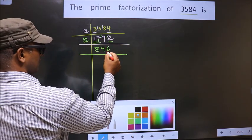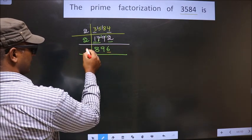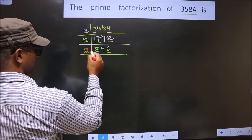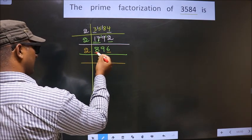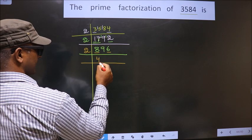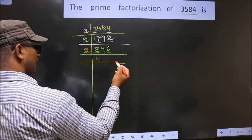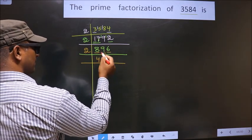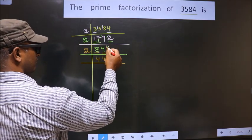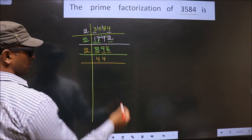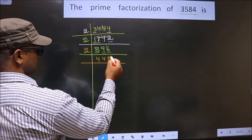Now, for this number, the last digit is 6, which is even, so we take 2 here. First number is 8. When do we get 8 in the 2 table? 2 fours 8. Next number is 9. A number close to 9 in the 2 table is 2 fours 8. 9 minus 8 is 1, carried forward making it 16. When do we get 16 in the 2 table? 2 eights 16.